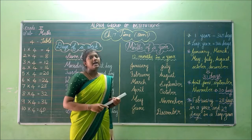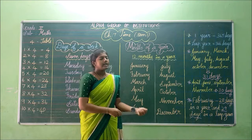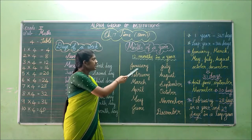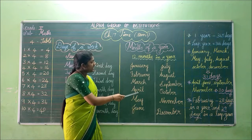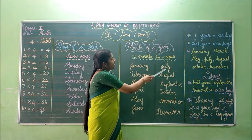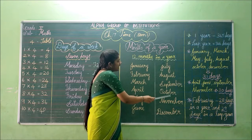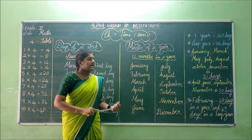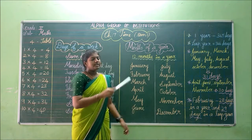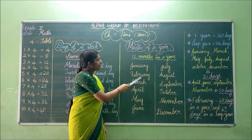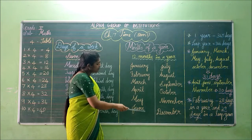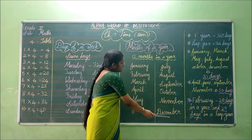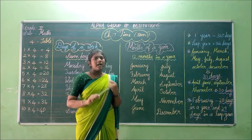Next we will go on to months of a year. So how many months are there in a year? There are 12 months in a year. And they are January, February, March, April, May, June, July, August, September, October, November and December. So January is the first month of the year and December is the last month of the year.